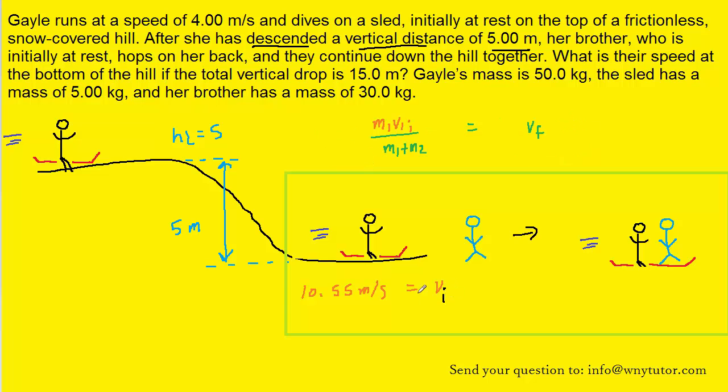Note that the initial speed of Gale and the sled was what we found to be 10.55 meters per second, so that's going to be plugged in right here. Remember that the mass M1 is of Gale and the sled together, so that's 55 kilograms. And then M2 is the mass of the brother, and that was stated as 30 kilograms. So let's plug in all those known values. When you process that on your calculator, you should get a final speed of approximately 6.82 meters per second. So that's the final speed of Gale, her brother, and the sled at this point in the problem.